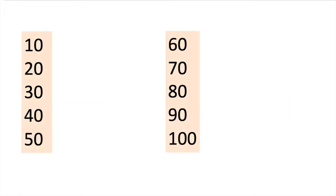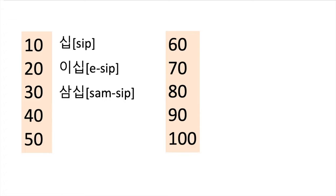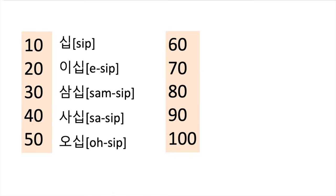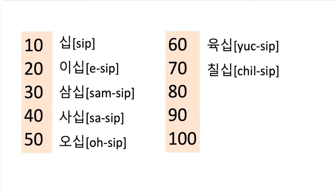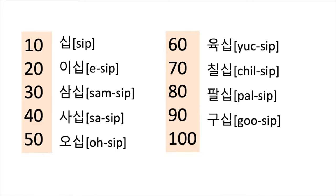Let's count by 10. So 10 was ship, and 20 is i ship. 30, 40, 50, 60, 70, 80, 90. And 100 is in Korean, baek. 100.